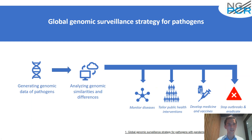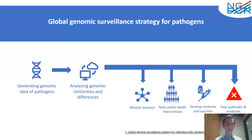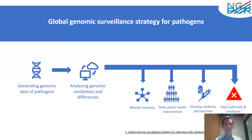That's something the World Health Organization states, because the global genomic surveillance strategy for pathogens includes generating genomic data — data actually generated in your laboratory — which has an impact on how we deal with viruses, because the generated data will be aligned to on-cloud analyses to search for similarities and differences. This data is then used to monitor disease, tailor public health interventions, develop medicines and vaccines, and to stop outbreaks or eradicate diseases.